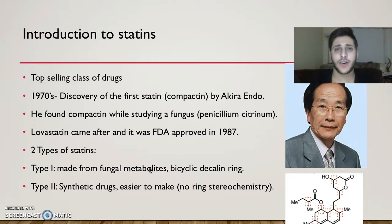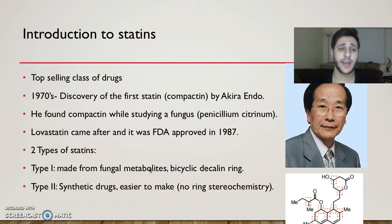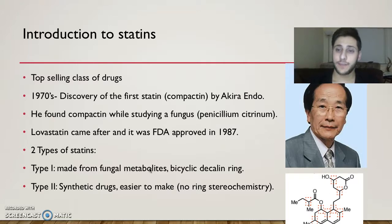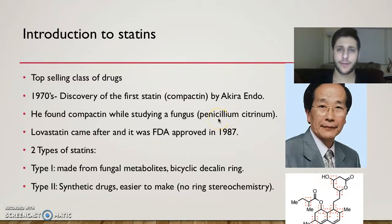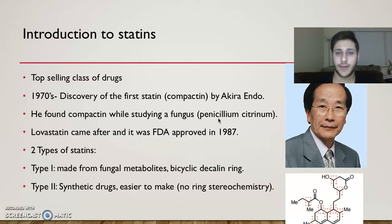Statins make up a class of drugs that lower cholesterol in our bloodstream. They are one of the top-selling classes of drugs in the US. In the 1970s, the first statin was discovered by a Japanese biochemist named Akira Endo, who was working at Sankyo pharmaceutical companies. He found compactin while studying a fungus called Penicillium citrinum. Everyone was excited to test it; however, during preclinical trials, the drug was shown to be toxic in animals and so it never reached clinical trials.